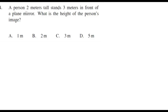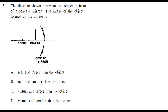A person 2 meters tall stands at a distance of 3 meters in front of a plane mirror. The 2 meters is the height of the object and 3 meters is the object distance. What is being asked is the height of the image — since height of a person is the same as the height of the image, this is the correct answer.